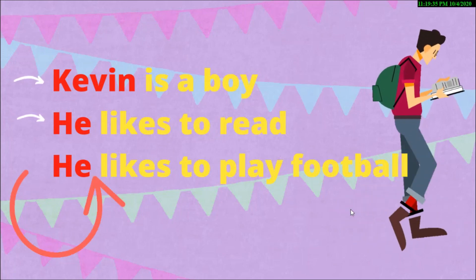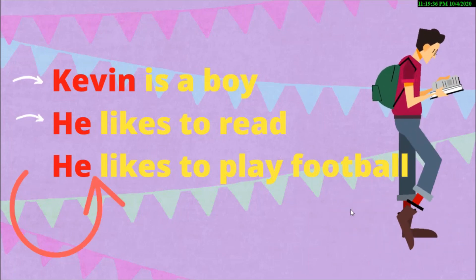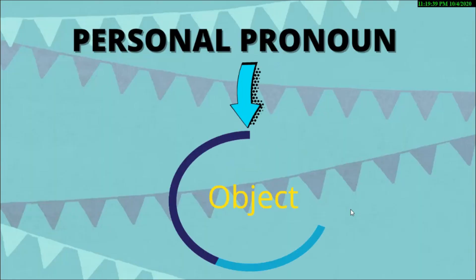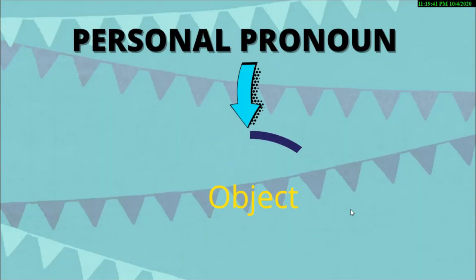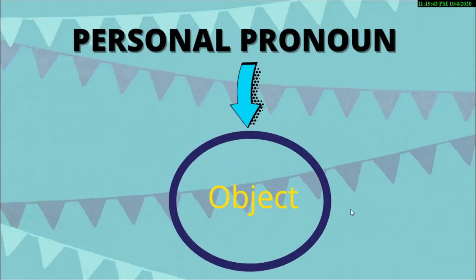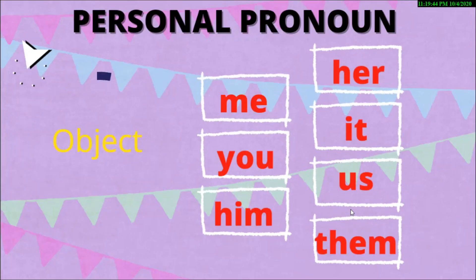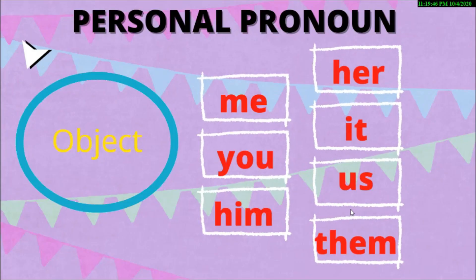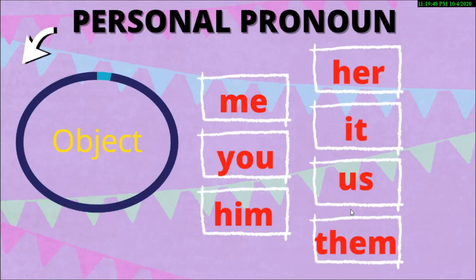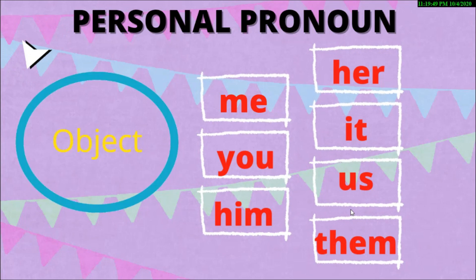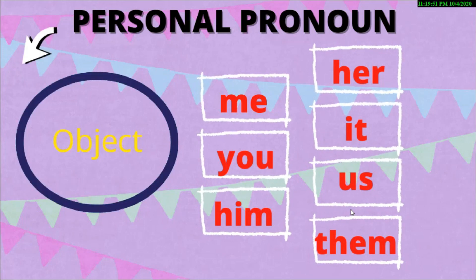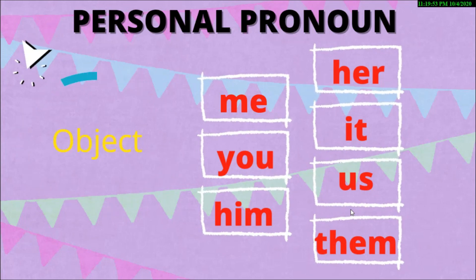That sounded so much more natural! Now let's focus on another type of personal pronouns: object pronouns. Me, you, him, her, it, us, them. An object pronoun is the receiver of the action.